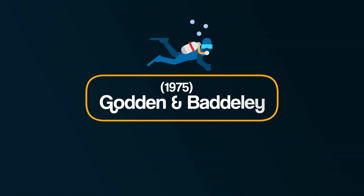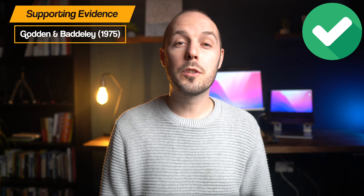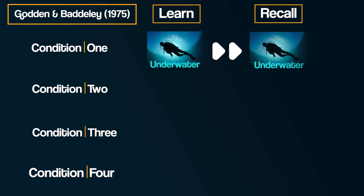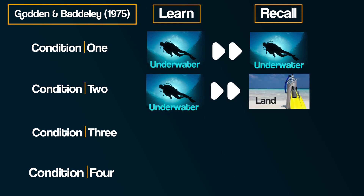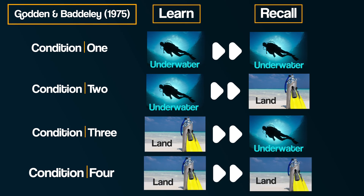Now let's consider two pieces of evidence for each of the explanations. Firstly, research by Godden and Baddeley in 1975, which demonstrates context-dependent forgetting. Professional scuba divers often found that they had difficulty recalling their underwater observations when they were back on land. Godden and Baddeley investigated this by testing scuba divers on their ability to remember lists of words under four conditions: learn underwater and recall underwater; learn underwater and recall on land; learn on land and recall underwater; and learn on land and recall on land. They found that recall was best for conditions one and four — when the cues available at recall were the same as at learning, demonstrating the encoding specificity principle — and recall was worst for conditions two and three, when the context was different.